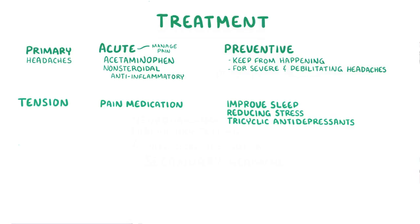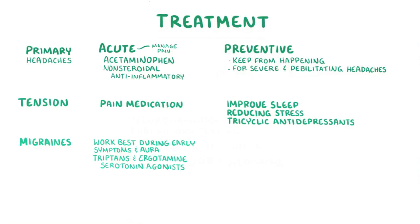For migraines, pain medications work best if used at the first sign of an attack, during early symptoms or aura. If the pain is very severe, triptans or ergotamine — which are serotonin agonists — can be useful because they mimic serotonin and cause vasoconstriction. Migraine medications are sometimes used with caffeine to be more effective. For preventative treatment, options include beta blockers and calcium channel blockers, tricyclic antidepressants, and some anti-seizure medications like valproate.